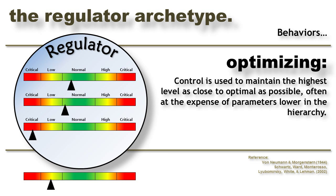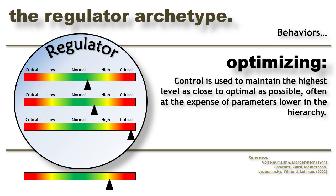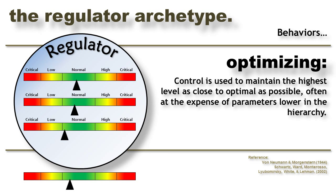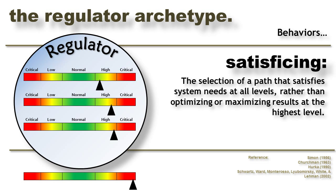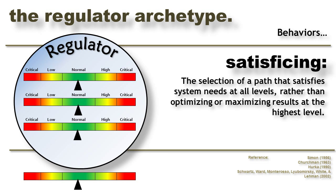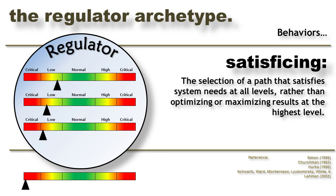The problem of heterostasis can be seen in this example. As external conditions begin to vary, the system takes steps to keep the highest priority variable as close to normal as possible. This optimizing approach, while very good for the one parameter, may force other parameters into critical ranges where they're likely to incur damage. By following strict optimization, the Regulator may protect one parameter at the expense of the whole system. An alternative to optimizing is satisficing behavior — here the system knows the tolerances of each of its parameters and rather than keeping the key parameter as close to normal as possible, it allows it to drift into high but still safe territory. This approach allows the parameters lower in the hierarchy to stay closer to normal, incur less entropy, and potentially prolong the lifetime of the system as a whole.